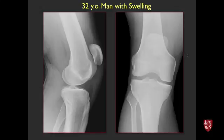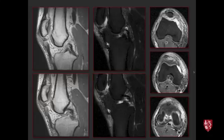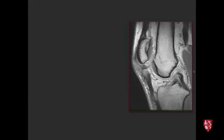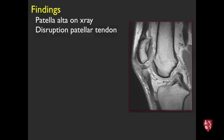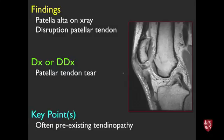Next case, 32-year-old man with knee swelling. On x-ray there is patella alta — the patella is too high. On MRI there's disruption of the patellar tendon at the proximal portion with the patella elevated — a high-grade, likely complete patellar tendon tear. These tend to occur in patients with pre-existing proximal patellar tendinopathy (jumper's knee) unless there is a high-energy injury.